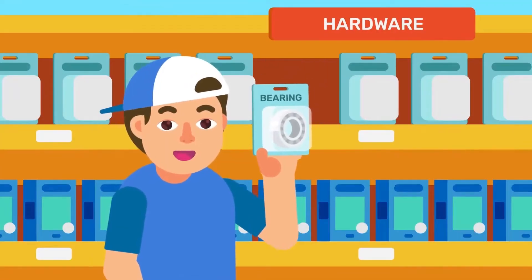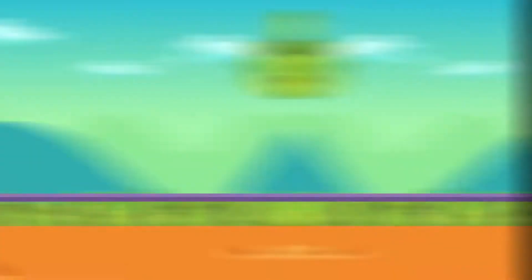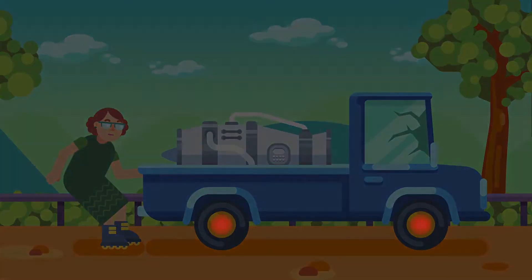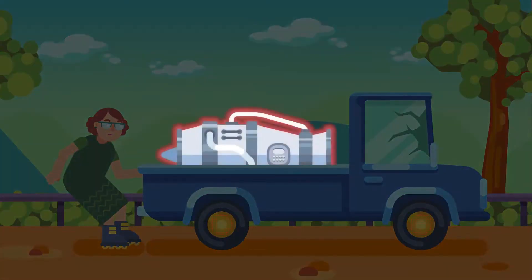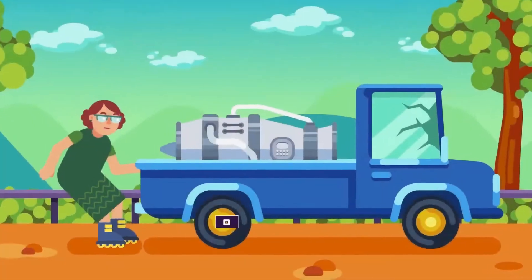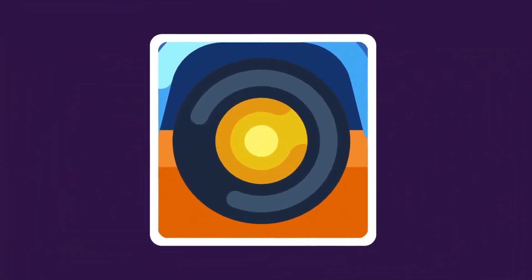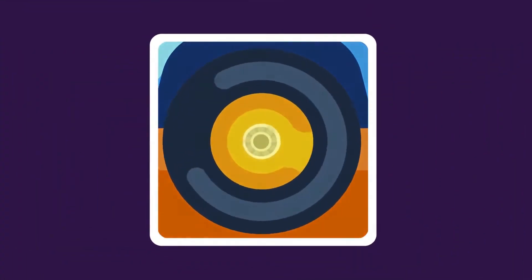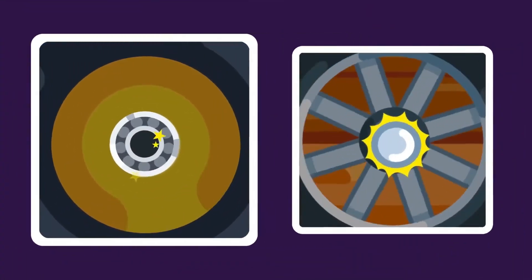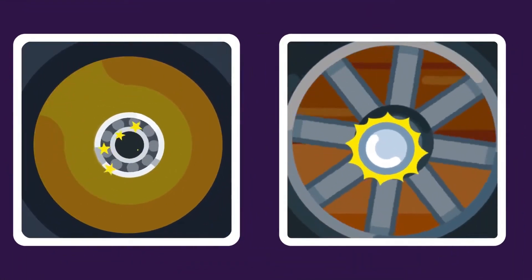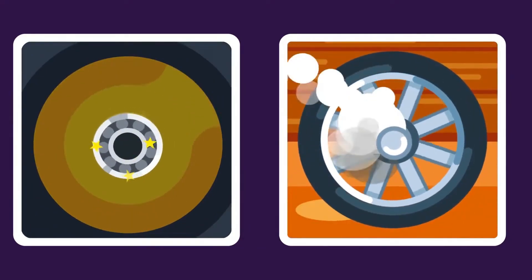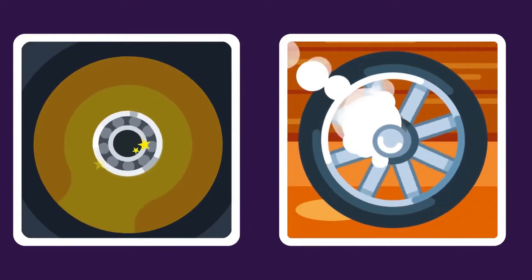Ball bearings are used to reduce friction between moving parts of cars, machines and inline skates. Placed between moving parts, ball bearings roll around and prevent moving parts from rubbing against each other. This reduces the wear and tear of these parts.